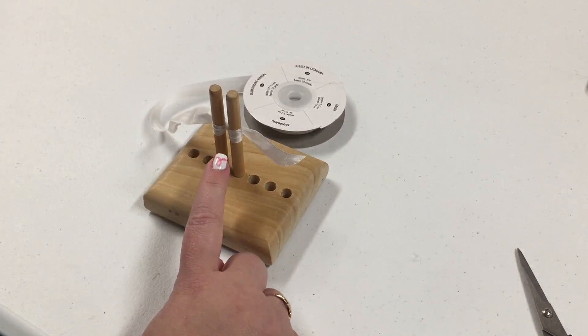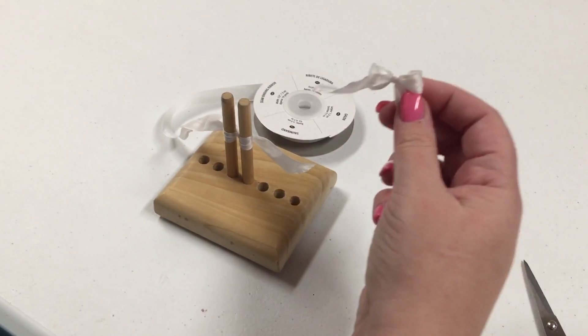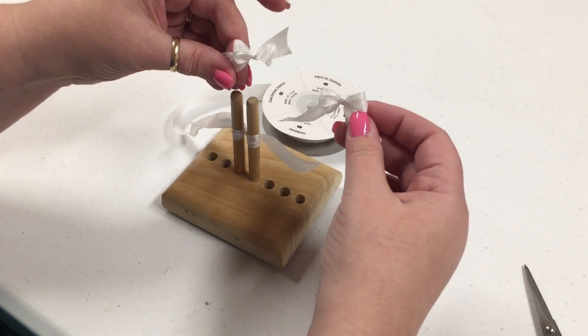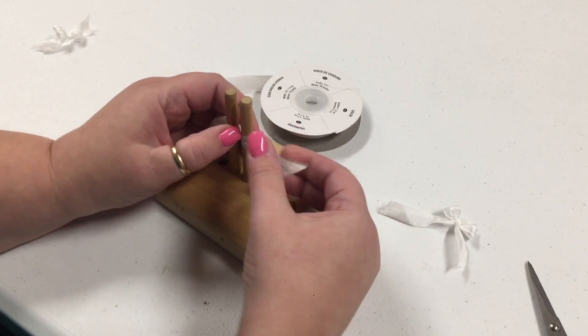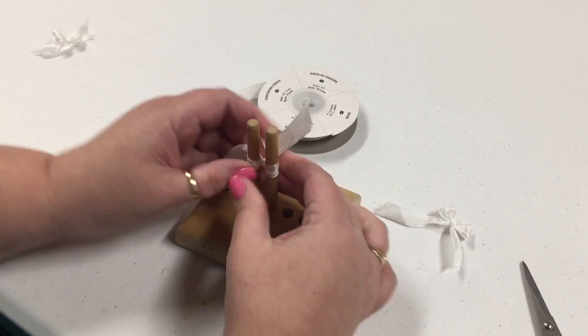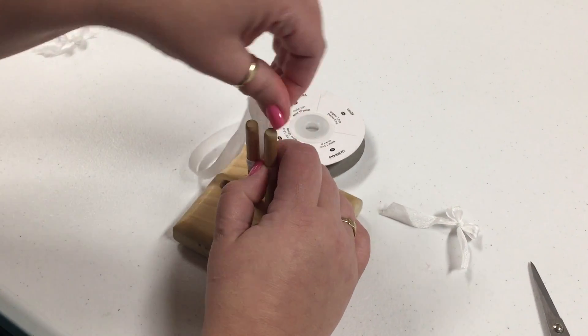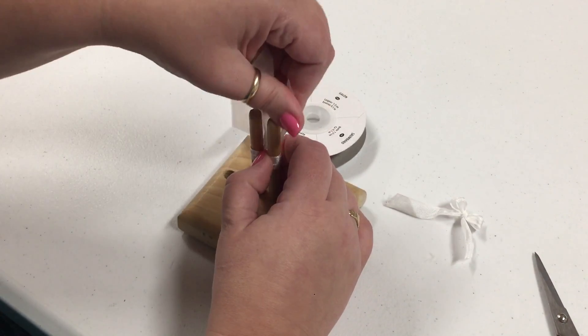And if I want this bow to hang down, as opposed to standing out straight, I would hold the knot and pull on both sides, one at a time. Hold the knot and pull until you get it to hang the way you would like.